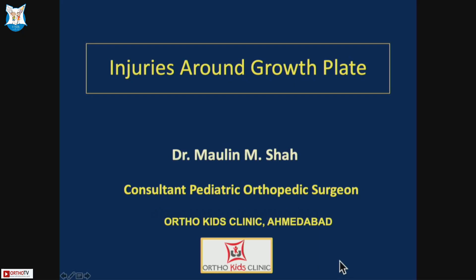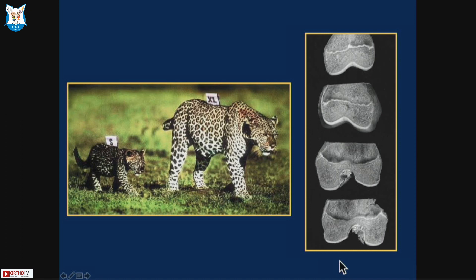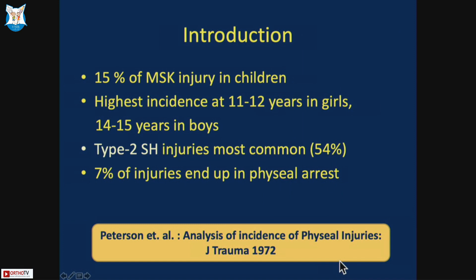The difference between adults and children is the growth plate, and it carries great importance when treating skeletal injuries. One must be aware of growth plate anatomy to make sound decisions. 15% of MSK injuries in children involve the growth plate. Highest incidence is around 11-12 years in girls and 14-15 in boys. Type 2 Salter-Harris is the most common injury, and 7% of injuries end up with physeal arrest. Many classifications were described after Salter and Harris, but we still prefer to use Salter-Harris because it has prognostic importance.